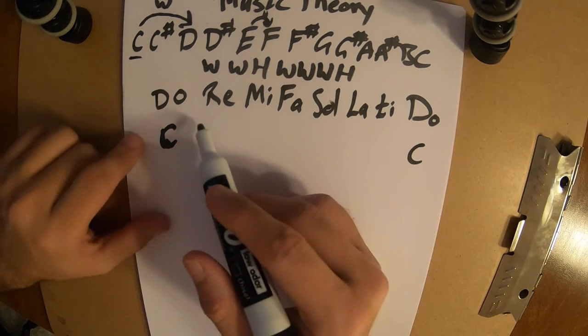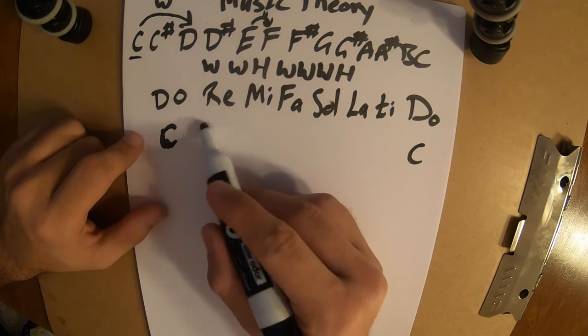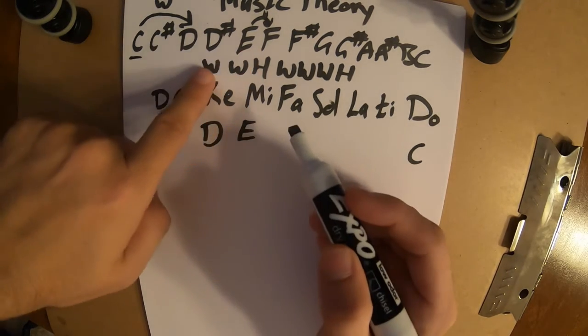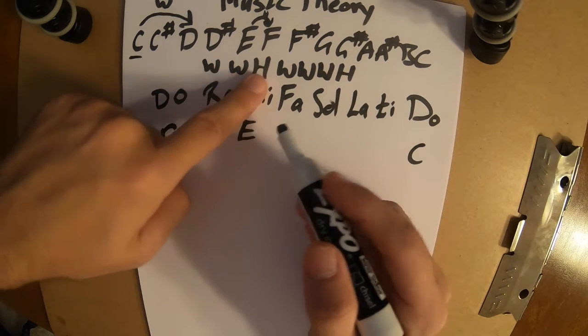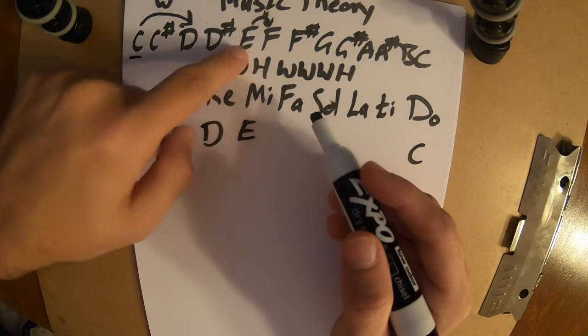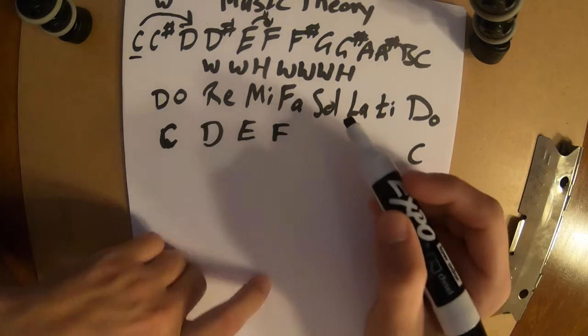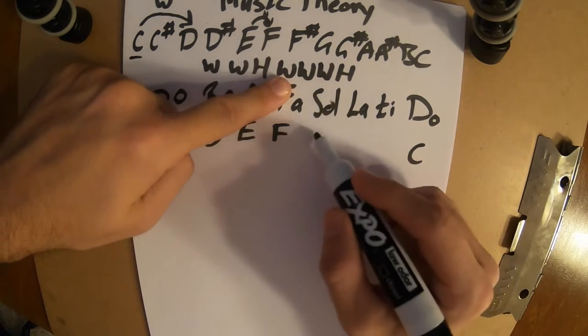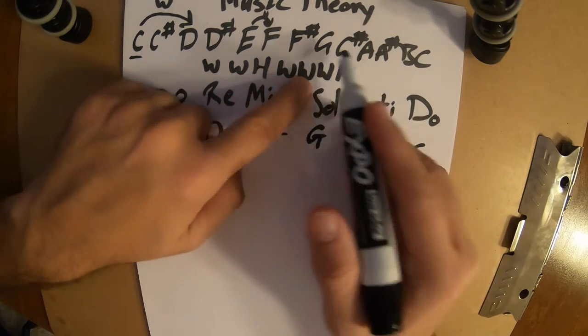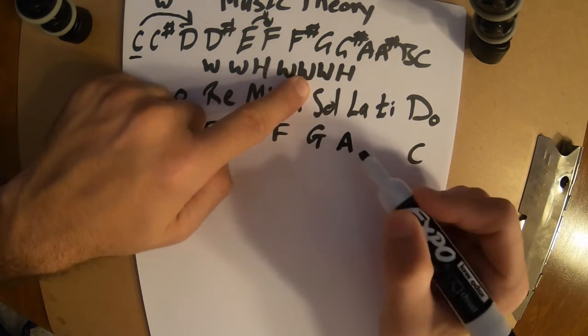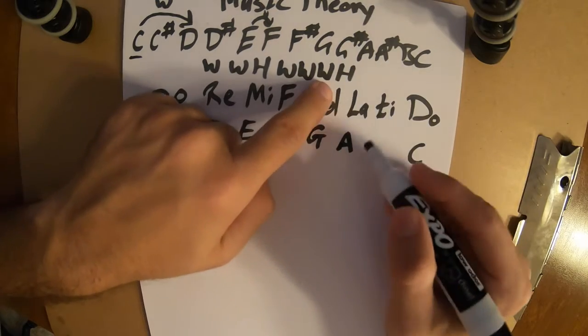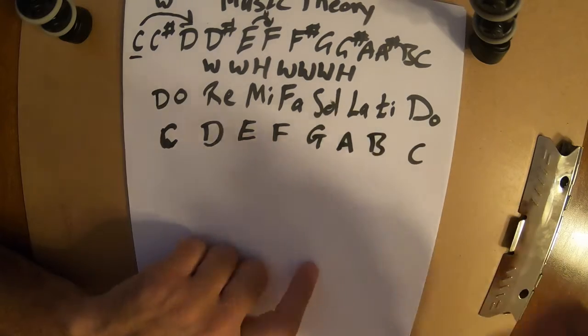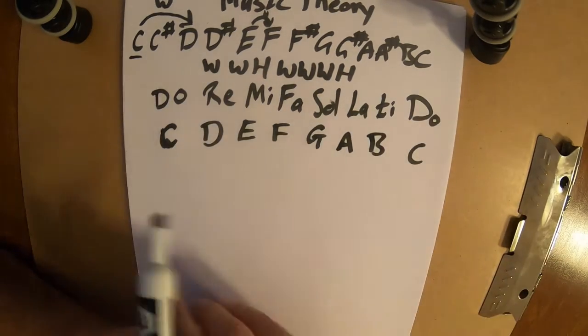Then how do we find the rest? Well, this is this pattern. So C, a whole step for that brings us to D. From D, a whole step brings us to E. Next thing, we did two whole steps. Now we have a half step. From E, half step F. From F, we have another whole step. So F whole step G. From G, we have another whole step A. From A, we have another whole step B. And from B, we have a half step bringing us back to C, which I wrote in a minute ago.